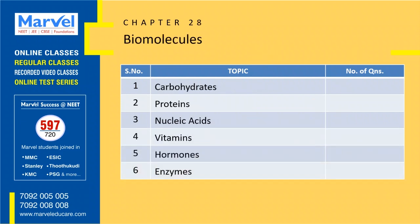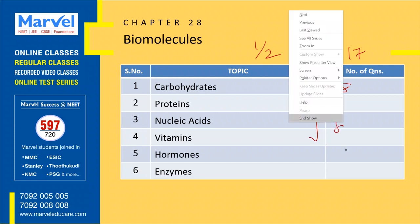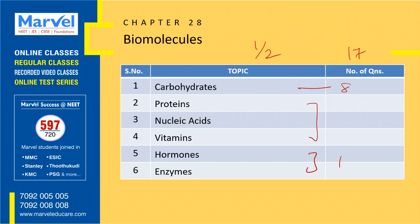Biomolecules: 17 questions from the last 8 years, expecting either 1 or 2 questions. The first topic itself has 8 questions, the next 3 topics have 8 questions, and the last topic has 1 question. Carbohydrates is a key topic with at least 2 questions expected. Biomolecules is one of the very important chapters in 12th standard chemistry.